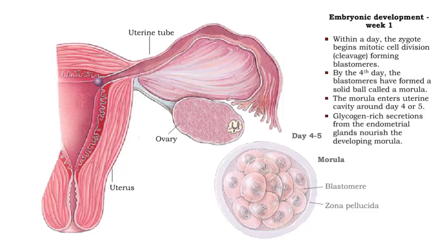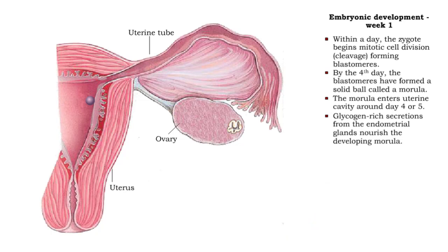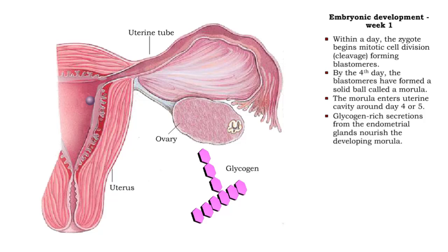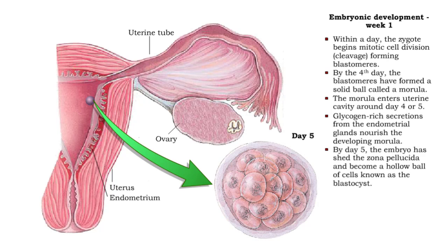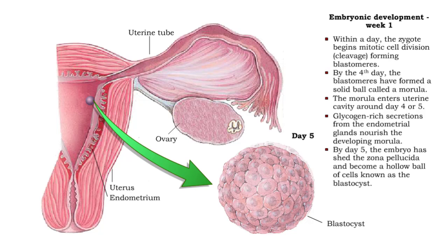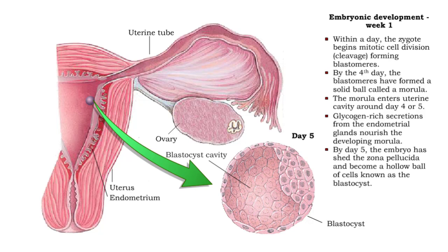By day four or five, the morula enters the uterine cavity. Here, glycogen-rich secretions from the endometrial glands nourish the developing morula. The blastomeres in the morula are stimulated to rearrange themselves and form a fluid-filled hollow ball of cells known as the blastocyst.